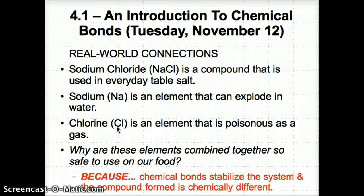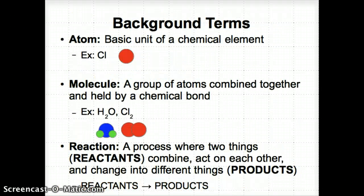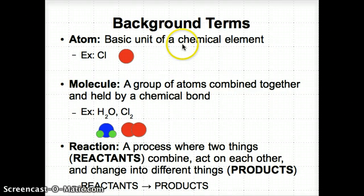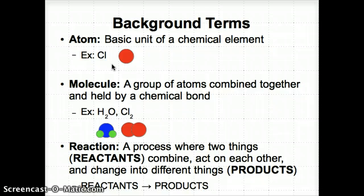Instead, it can be used as table salt on foods like steaks, burgers, or fries. Before we go into chemical bonds and what they are, let's talk about some background terminology. First, we have atoms. Atoms are the basic units of a chemical element. One element like chlorine (Cl) is considered an atom of one element — just think: if you have only one element, it's always going to be considered an atom.